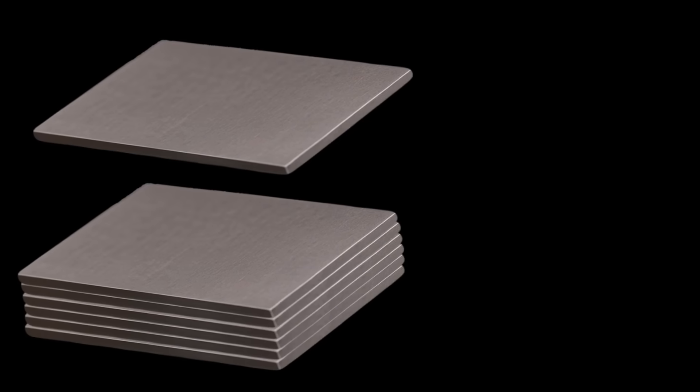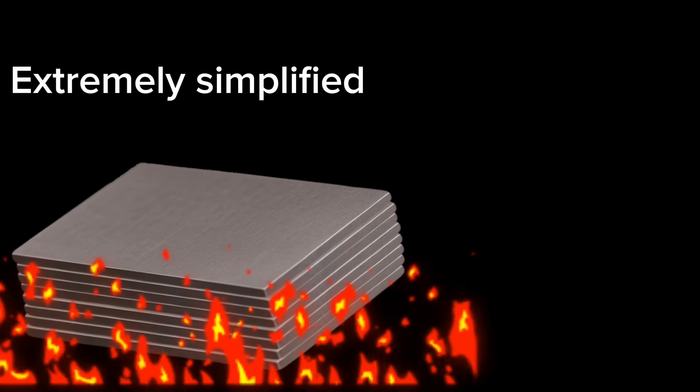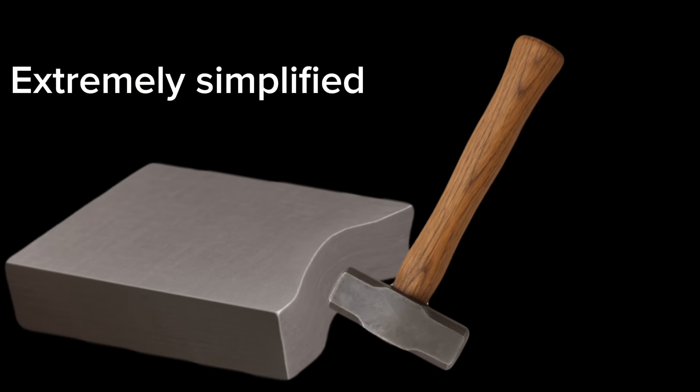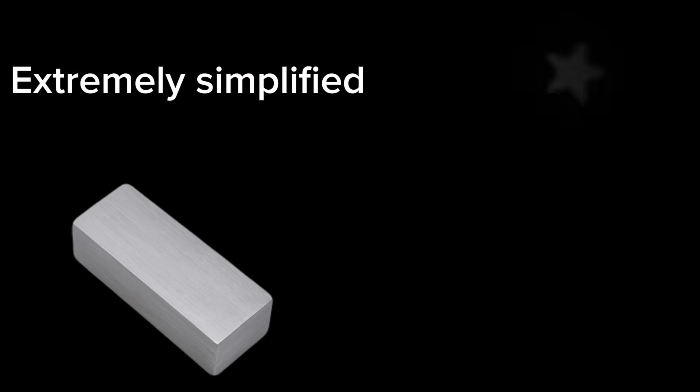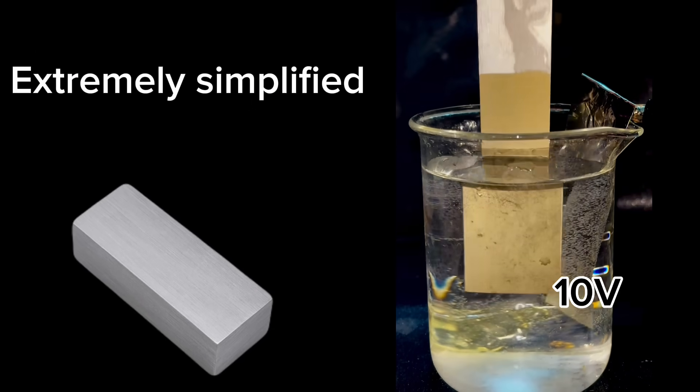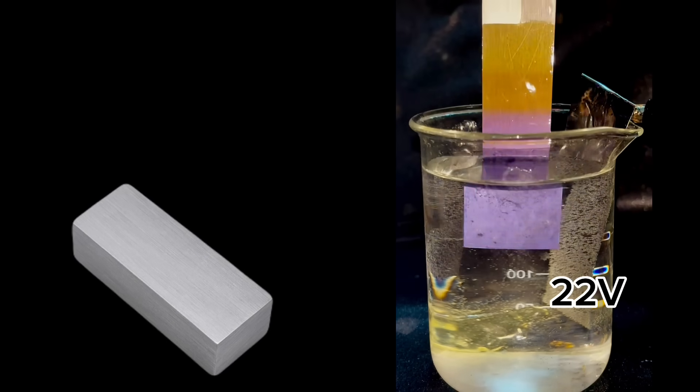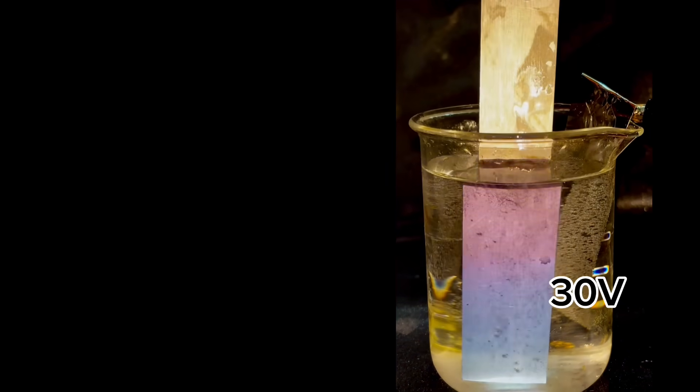Titanium Damascus is made by metallurgically bonding different grades of titanium together, and then deforming and shaping this bonded titanium to create patterns within the metal. Titanium anodizes very beautifully, so you can take the resultant material you create and anodize it to bring out these beautiful colors. However,